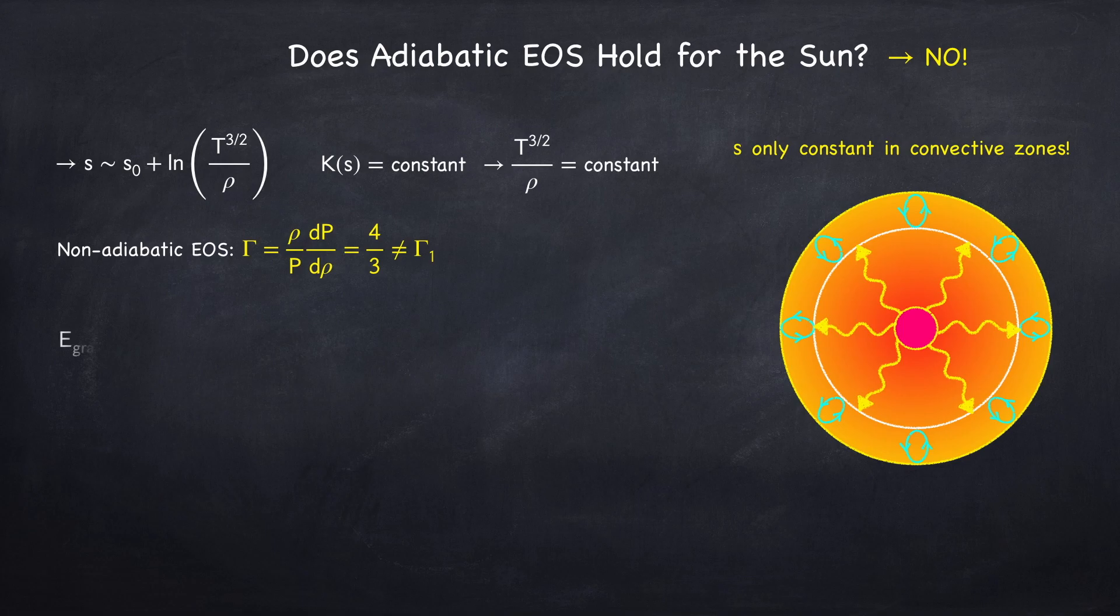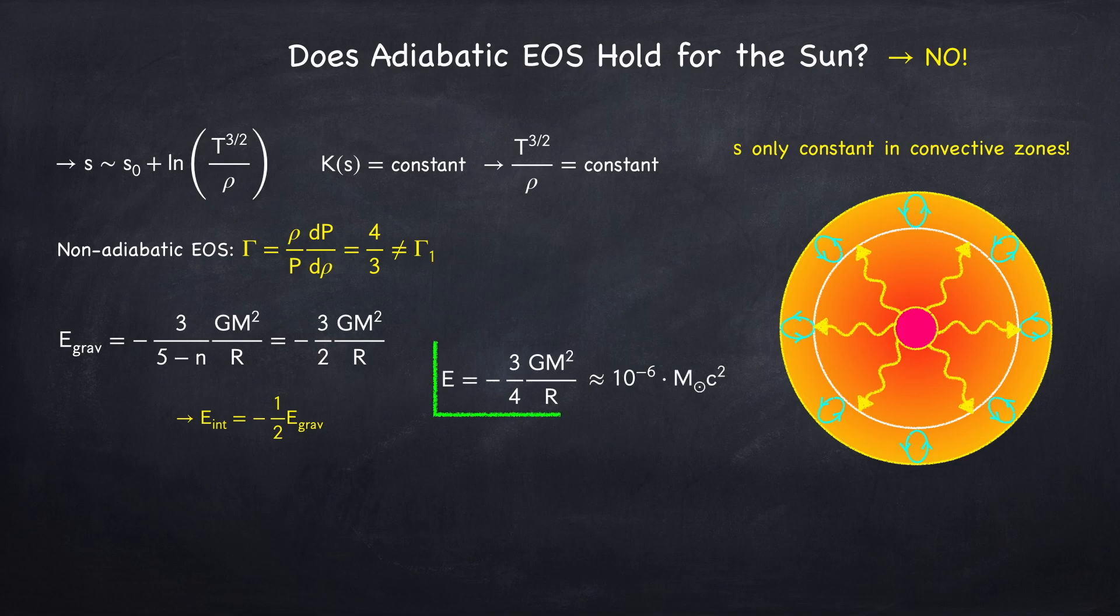Recall that for a general polytrope profile, the gravitational energy has the following form. If gamma equals 4 thirds, then n equals 3, so that gives us the factor out front to be 3 halves. Now, we've already shown that the Virial theorem holds for any equation of state, as long as you have a monatomic Maxwell-Boltzmann gas. So the total energy of the sun will be 3 fourths gm squared over r.